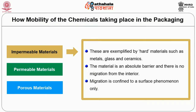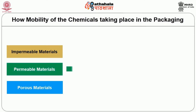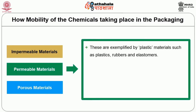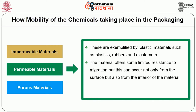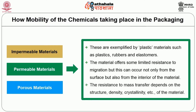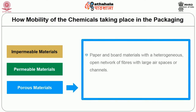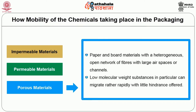Next are permeable materials, exemplified by plastic materials such as plastics, rubbers and elastomers. The material offers some limited resistance to migration, but this can occur not only from the surface but also from the interior of the material. The resistance to mass transfer depends on the structure, density, crystallinity, etc. of the material. The last type is porous materials — paper and board materials with a heterogeneous open network of fibers with large air spaces or channels. Low molecular weight substances in particular can migrate rather rapidly with little hindrance offered.